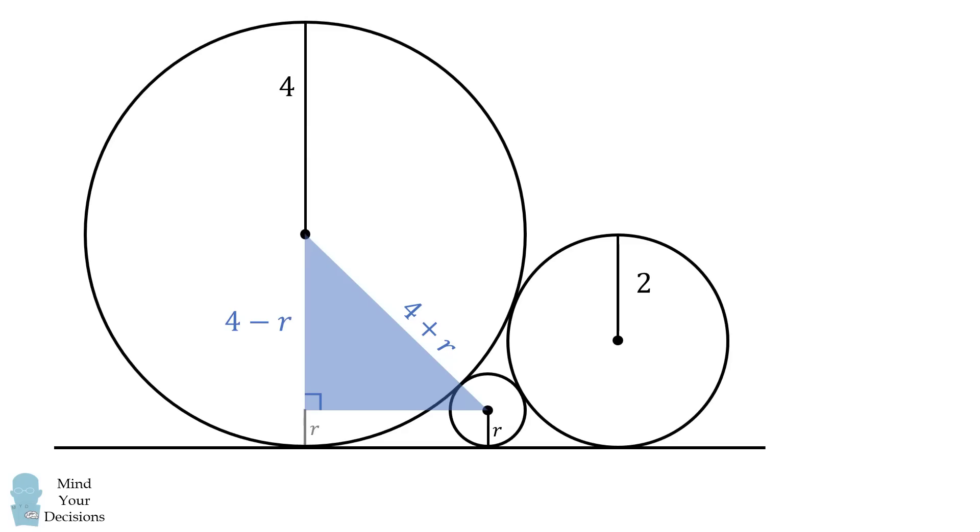The other leg of this triangle we can solve using the Pythagorean theorem. This will be the square root of the quantity 4 plus r squared minus the quantity 4 minus r squared. We can simplify this to be 4 times the square root of r.